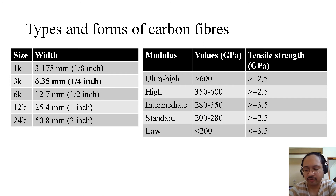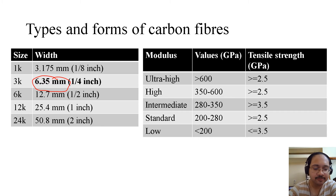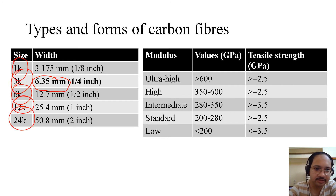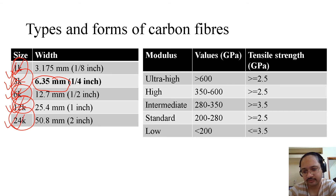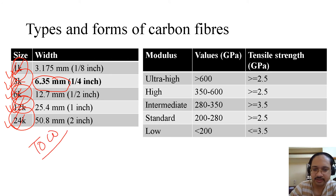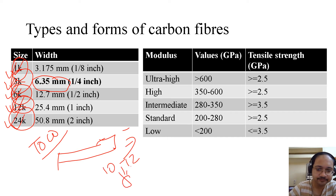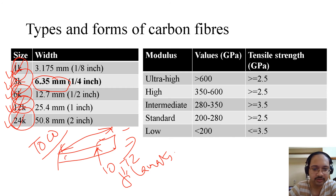Coming to types and forms of carbon fibers: carbon fiber typically comes in 1K, 3K, 6K, 12K, or even 24K tows, where K stands for thousand. So a 24K tow contains 24,000 fibers. These tapes, also called tows, have a roughly rectangular cross-section with approximately 10 to 12 filaments in the thickness direction and the remaining filaments across the width.